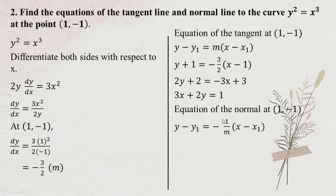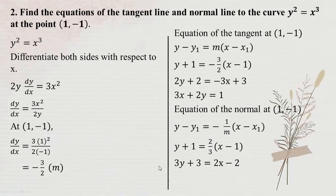The equation of the normal line: y minus y1 equal to minus 1 by m into x minus x1. So, slope of normal is the negative reciprocal of the tangent slope.